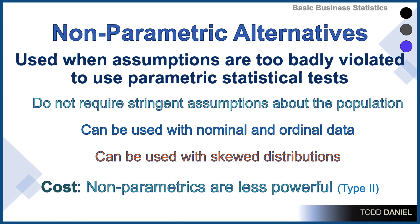Well, I've got good news. There are alternatives to parametric tests, and those are called non-parametric tests. A non-parametric test is used when the assumptions on a parametric test have been too badly violated to use parametric statistics.